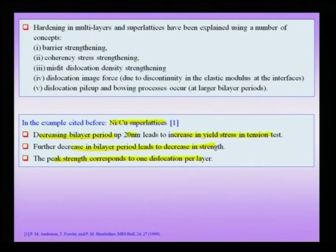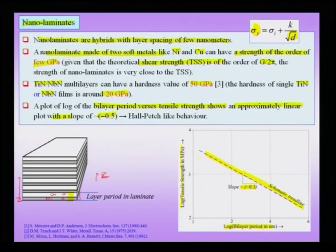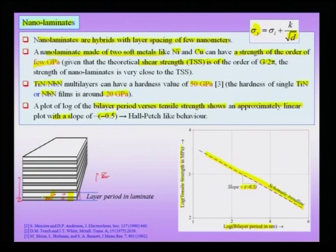We will soon see the mechanism attributed to this strengthening. To summarize: we can have nano hybrids in which both components forming the composite are at the nano scale. In this case the individual layers — nickel and copper — are in the nano scale. Such nano laminates show very high strength even though made of soft materials, approaching almost the theoretical shear strength, with yield stress of the order of gigapascals. Additionally, Hall-Petch-like behavior is also observed in a certain bilayer period regime.